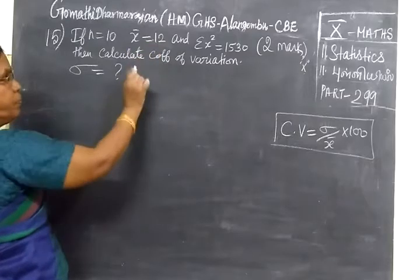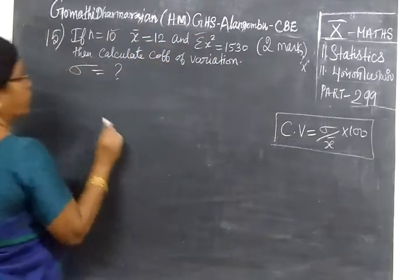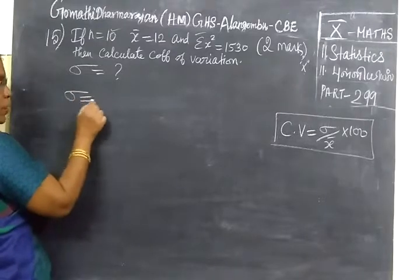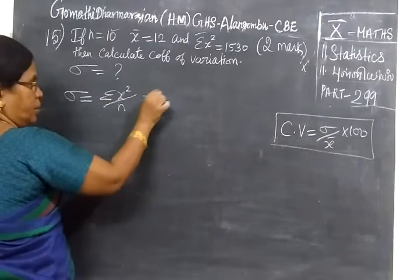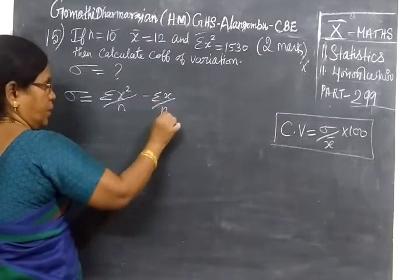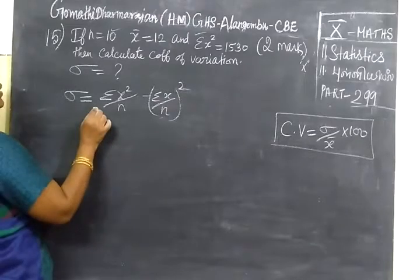X bar means given, N also given, X bar also given. We know the formula, Sigma is equal to Sigma X square by N minus X bar whole square. Type 1.